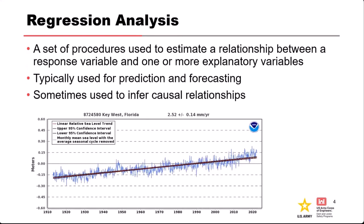Regression analysis is a set of procedures we use to estimate the relationship between a response variable — in this example on screen, that would be sea level — and one or more explanatory variables. In this simple plot, there's one explanatory variable: time on the horizontal axis. We typically use regression for making predictions and sometimes forecasting. You could project this forward in time to forecast future sea level. It's also sometimes used to infer a causal relationship between variables.